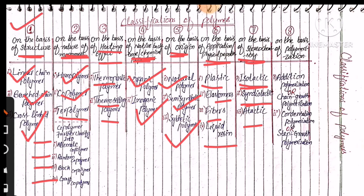The last — the eighth class — is classification on the basis of polymerization. The first type is addition polymer or chain growth polymerization, and the second is condensation polymerization or step growth polymerization. In our course content, the main topics discussed are chain growth polymerization and step growth polymerization.